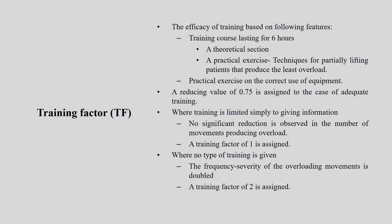Where training is limited simply to giving information, no significant reduction is observed in the number of movements producing overload — a training factor of 1 is assigned. Where no type of training is given, or training is given but there is no impact, it is 1. If there is no training and the frequency/severity of overloading movements is doubled, the training factor is assigned as 2. So: effective training = 0.75, training present but not effective = 1, no training with overload = 2.